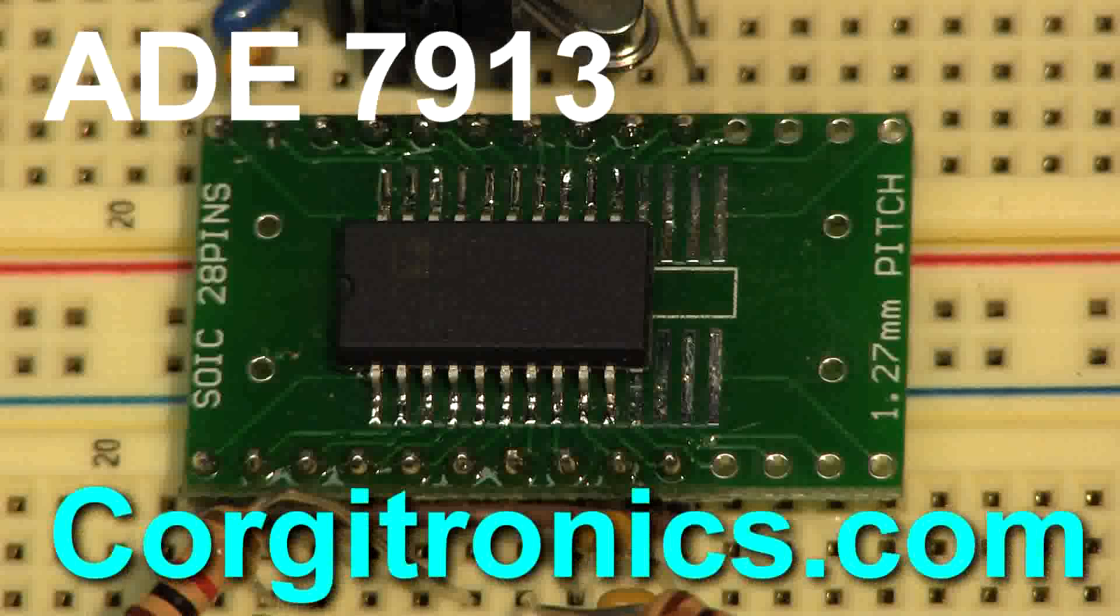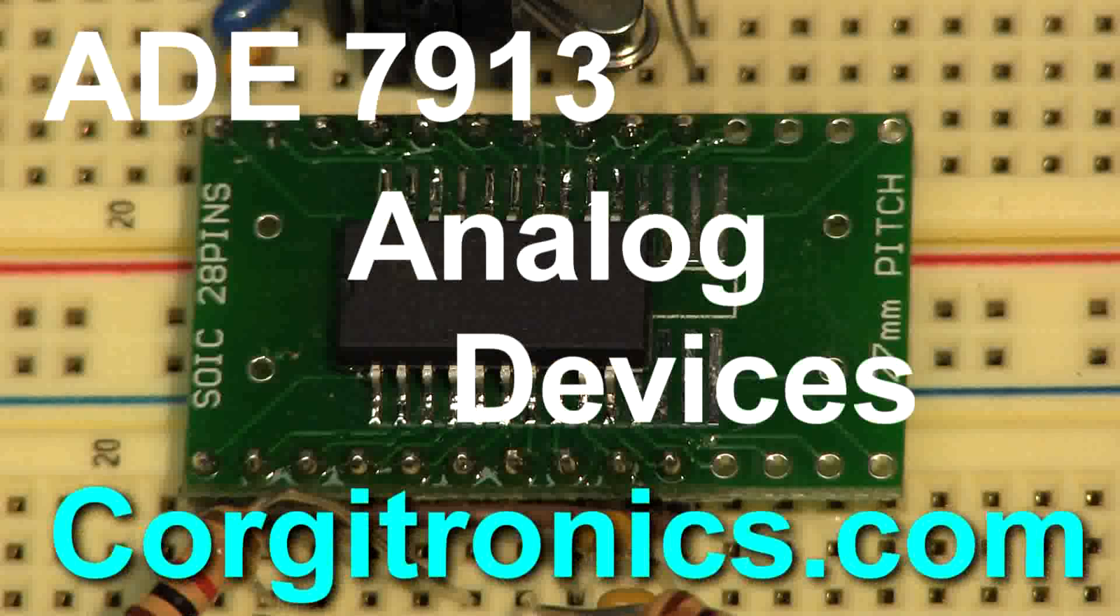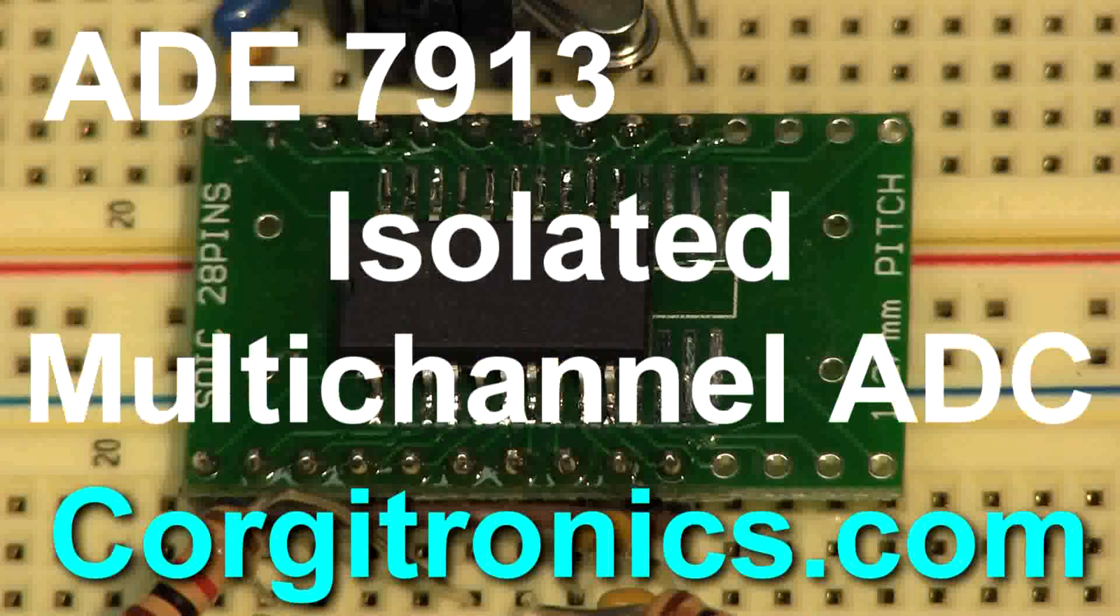In the continuing effort to measure AC line current, we're going to switch to the ADE7913. This little guy can do quite a bit. It's built to do what we're looking for. It has isolation and everything else. Let's take a quick look at it.